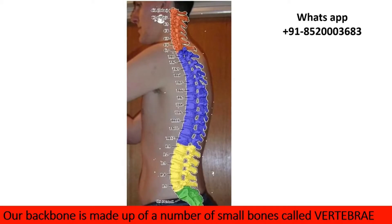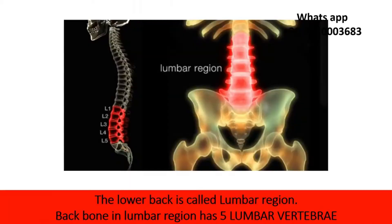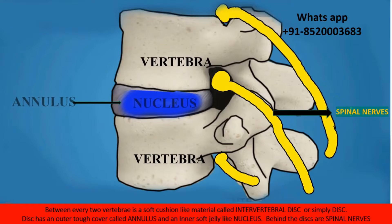Our backbone is made up of a number of small bones called vertebrae. The lower back region is called the lumbar region. The backbone in the lumbar region has 5 lumbar vertebrae. Between every two vertebrae is a soft cushion-like material called an intervertebral disc, or simply disc. The disc has two components: an outer covering called the annulus and an inner soft jelly-like material called the nucleus.